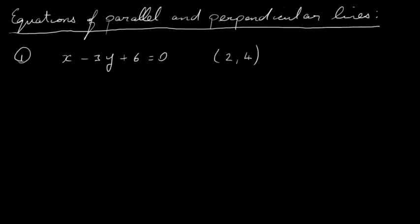In this video, I'm going to have a look at the equation of lines that are parallel or perpendicular to a particular line that we're given. As a first example, I'm going to have a look at this line here: x minus 3y plus 6 equal to 0.